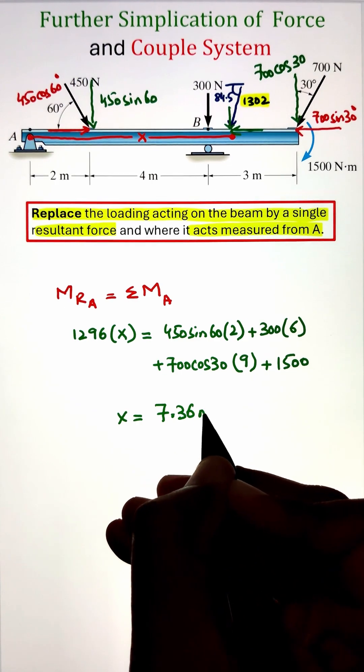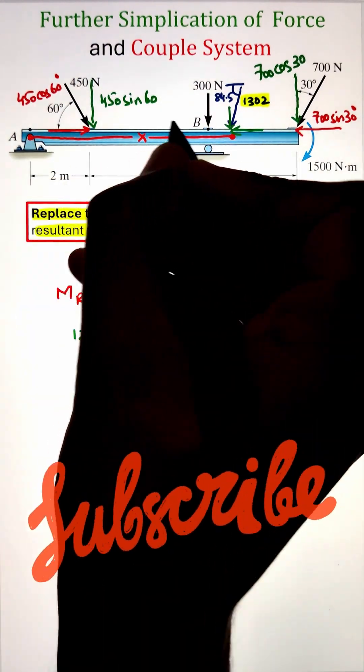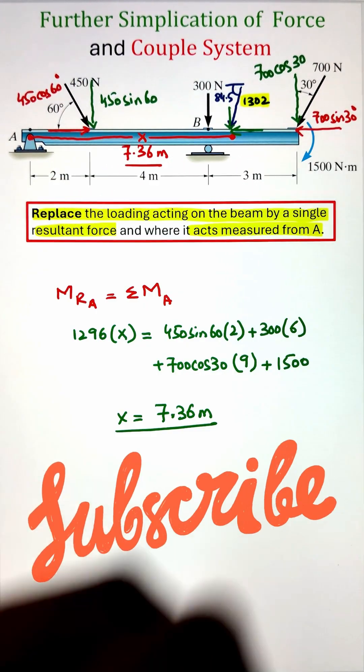So adding all of them together and solving for x, we get our final value of the position our resultant force is making with respect to point A as 7.36 meters.